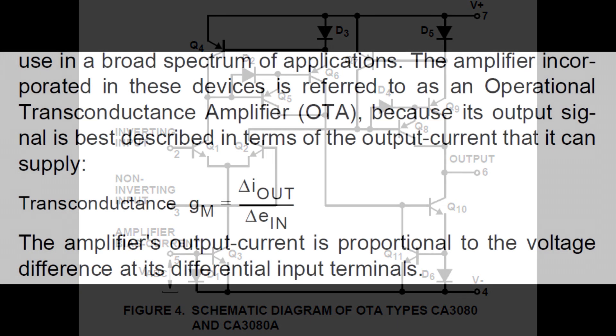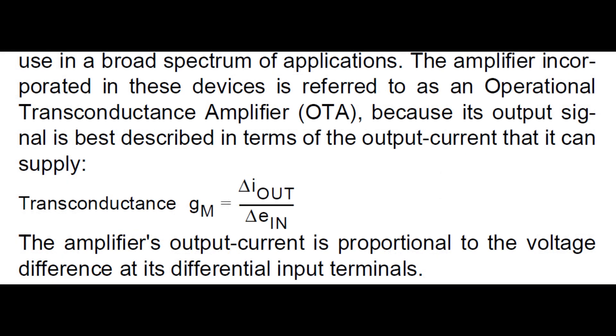So changes in voltages end up being changes in current on the output. And because you have control over the total current in that first pair, the bias current on the front, that will change how the amplifier amplifies it. It will amplify the current a little bit or amplify the current a lot.